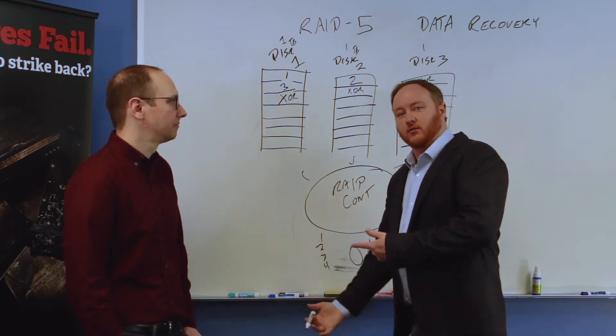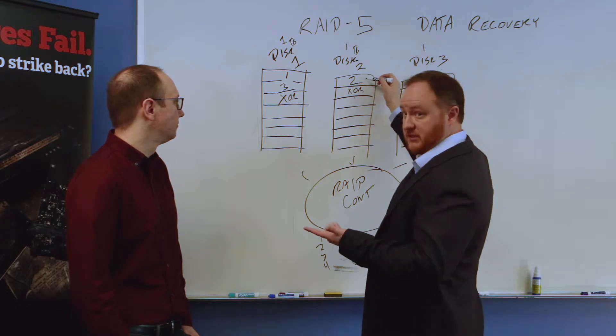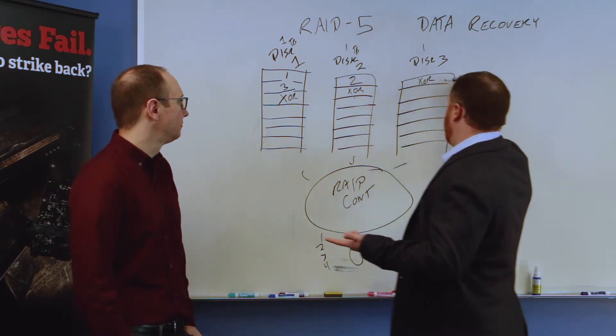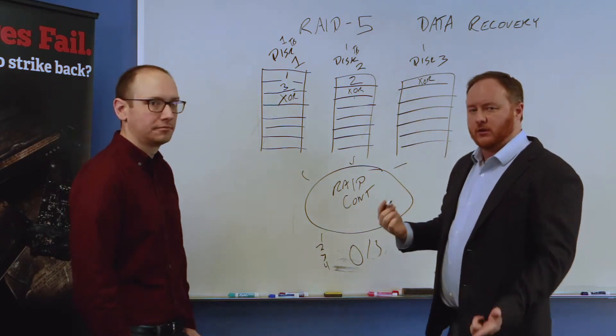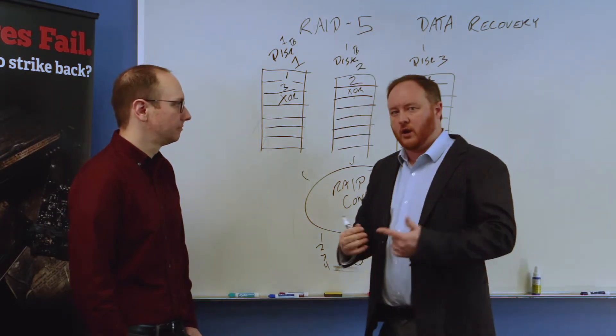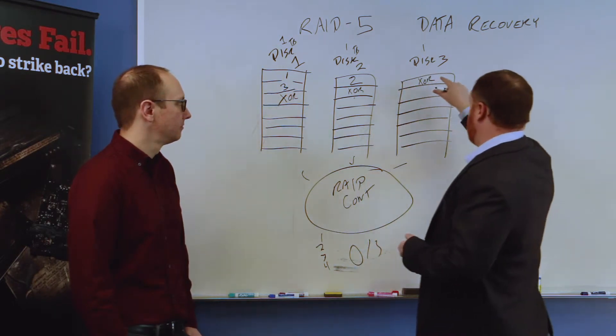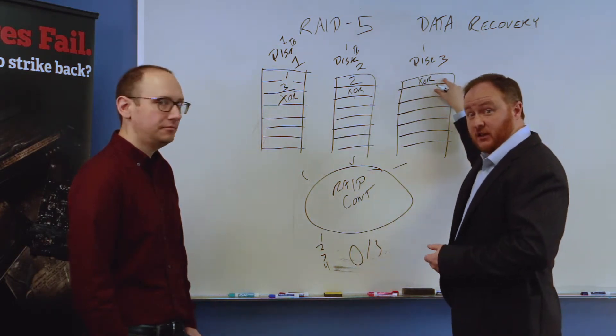Position one is gonna be on disk one, position two is gonna be on disk two. Position one, and then over here is gonna be XOR. Basically what happens if we were to lose disk one, you can run an algorithm for position one XOR this garbage that's sitting here and it will spit out the data that's in position two.